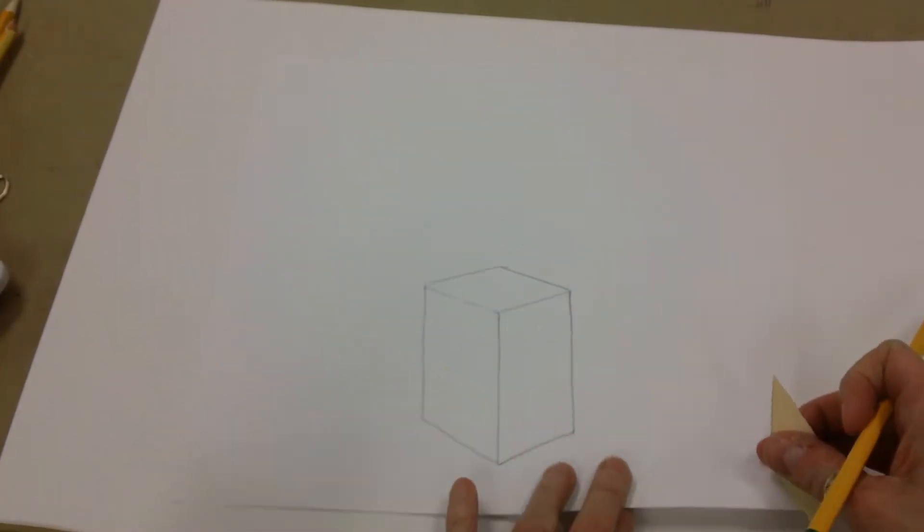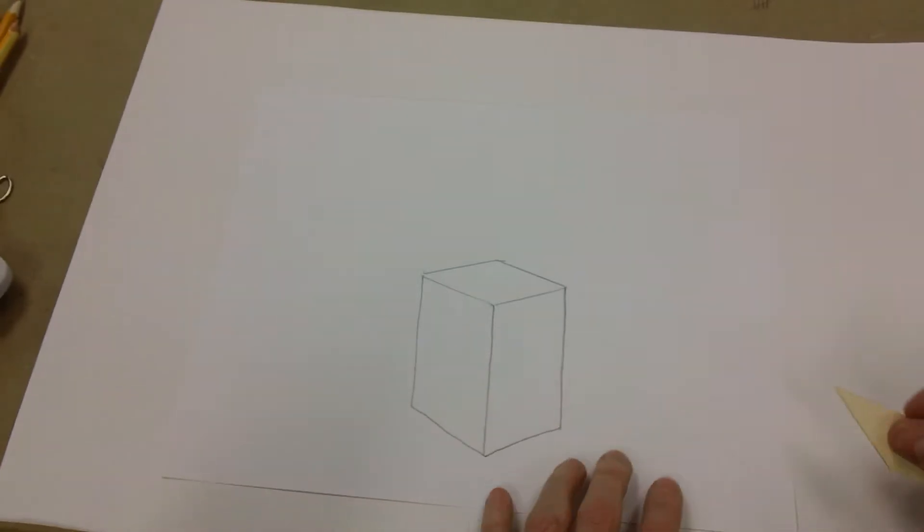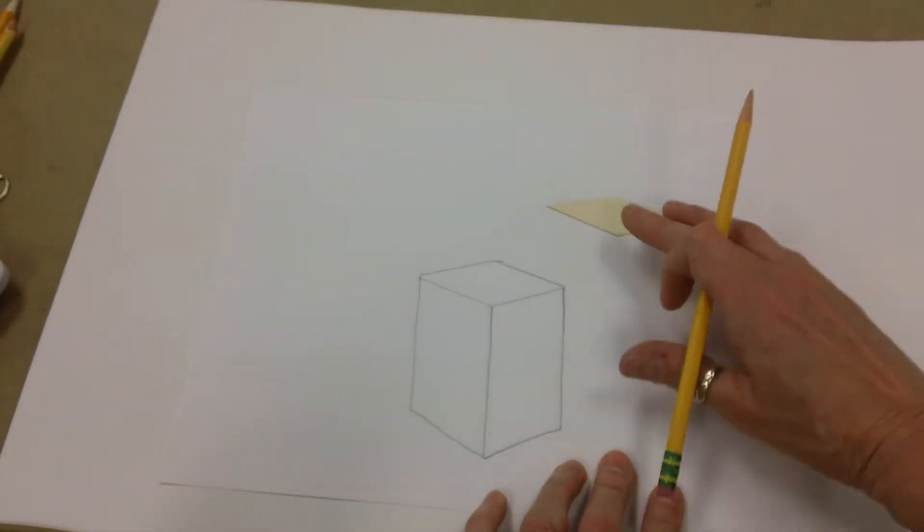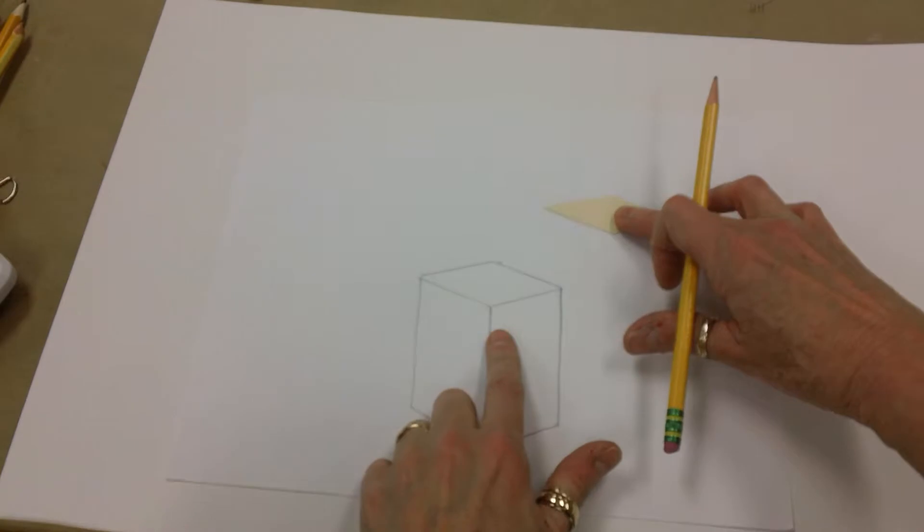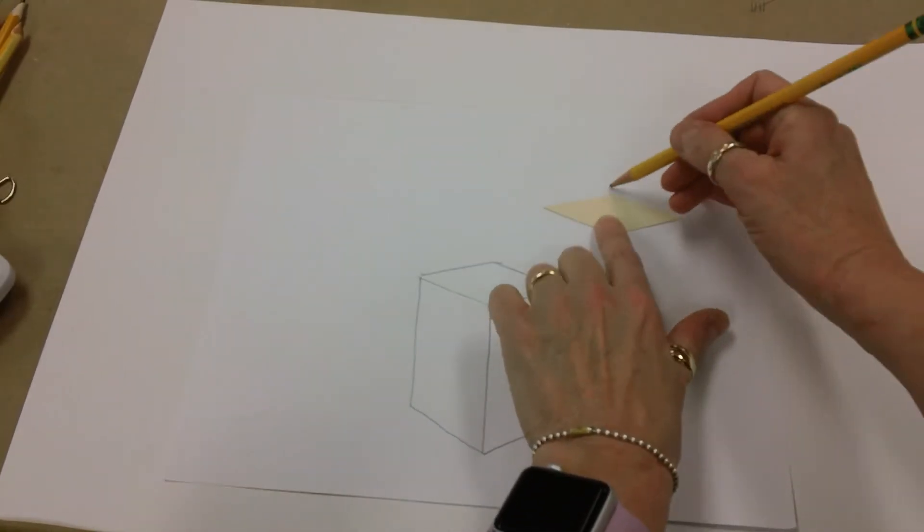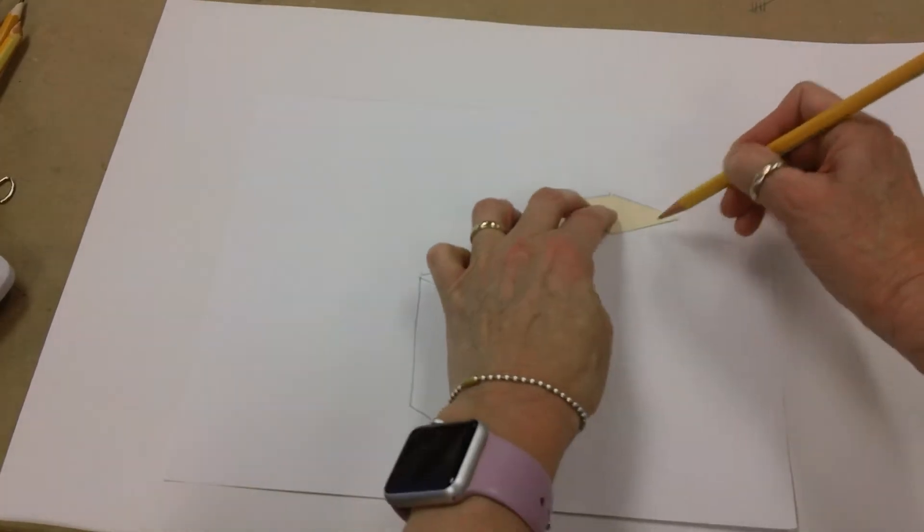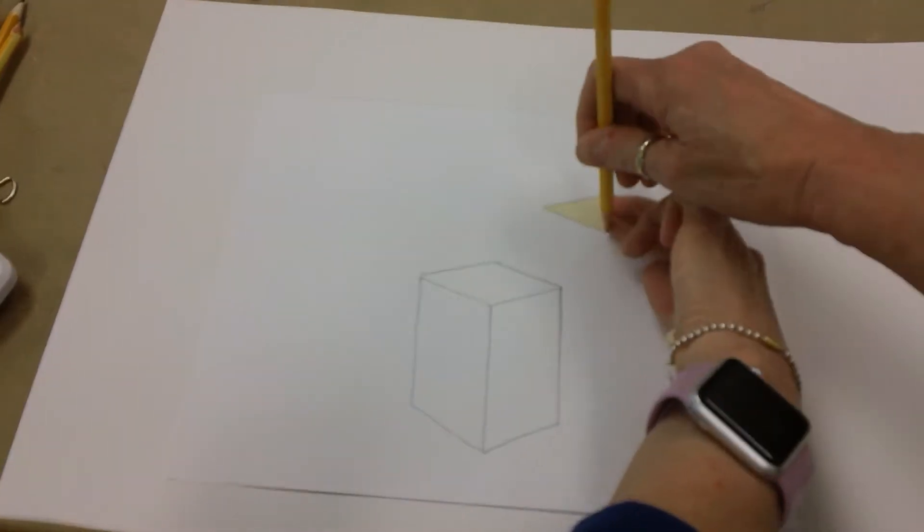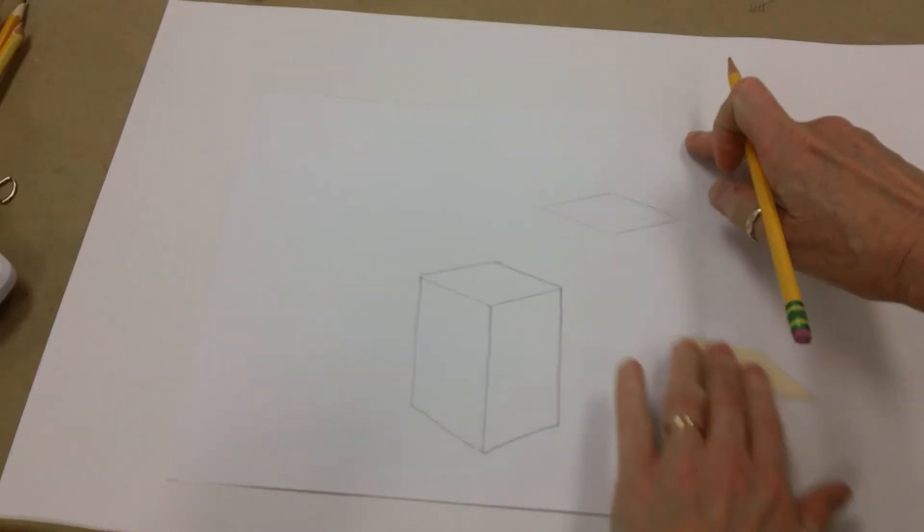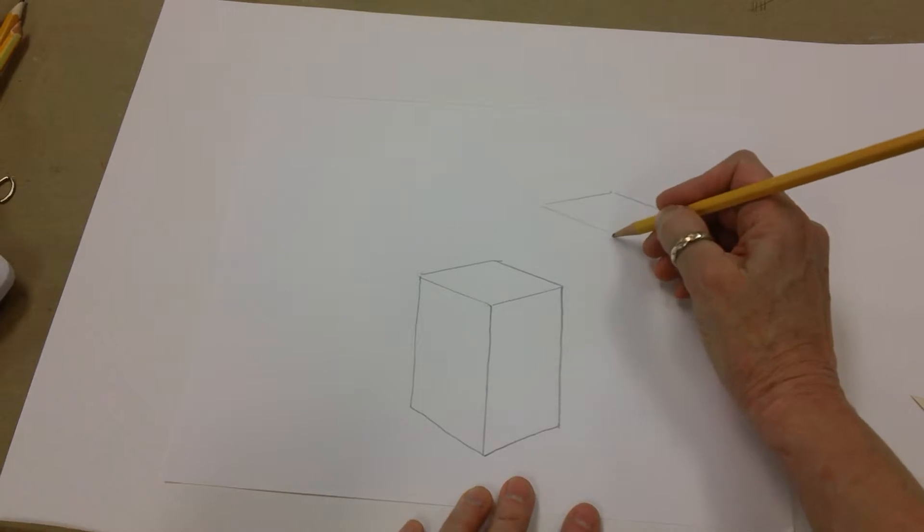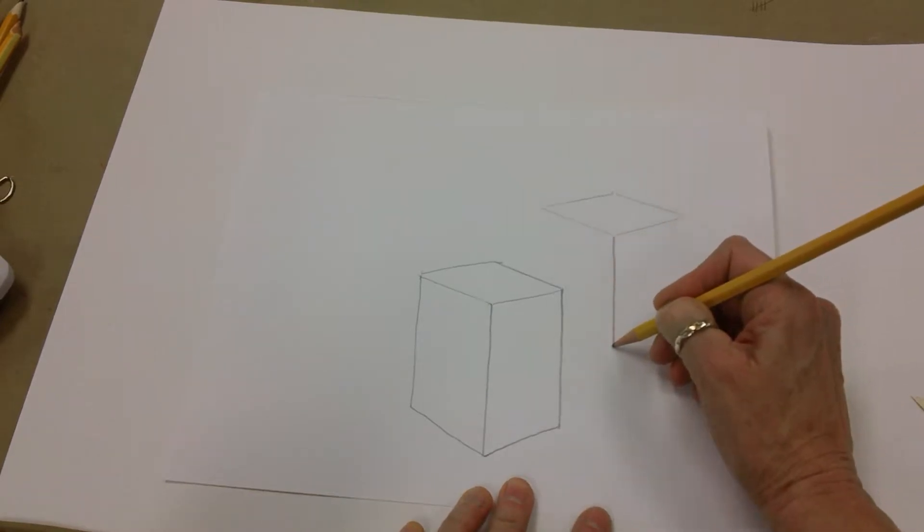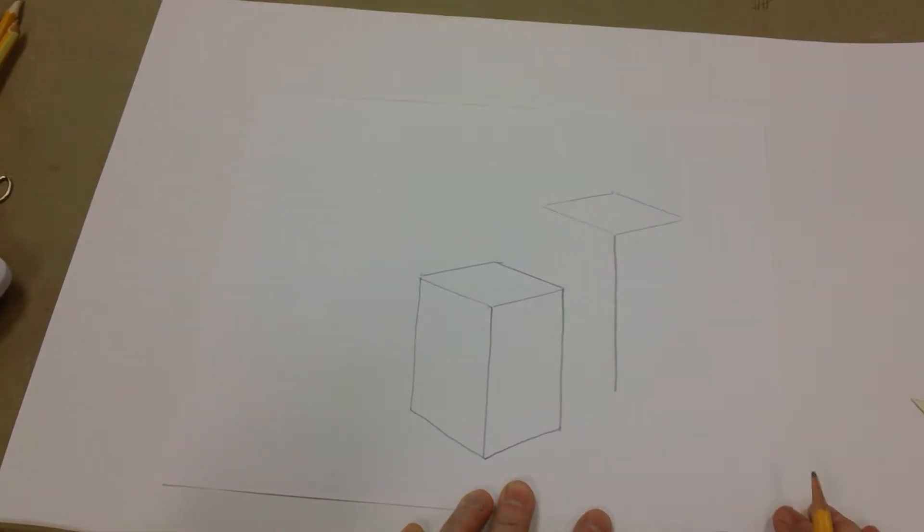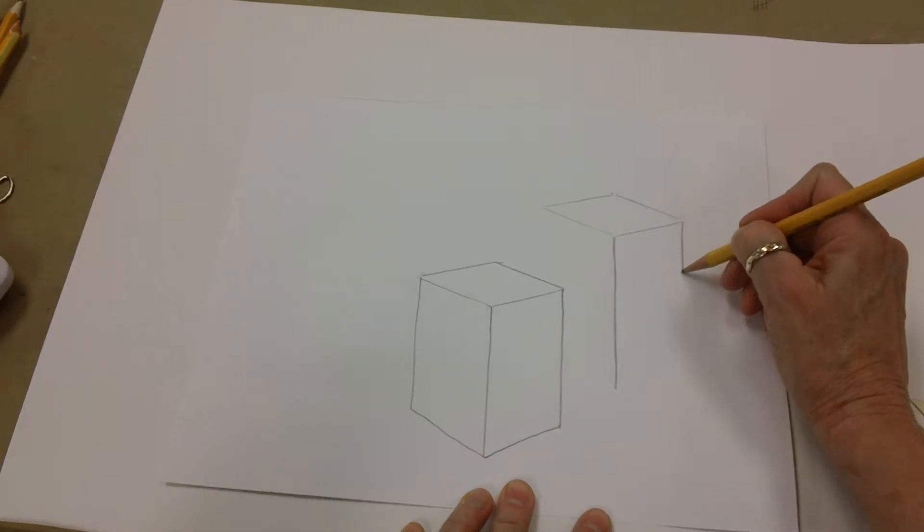So I'm going to make another building next to it because this is a cityscape. Maybe I want one here to be a little bit taller and a little behind this one. So trace, move that aside. I like to start with my center one right about here and then this one comes down.